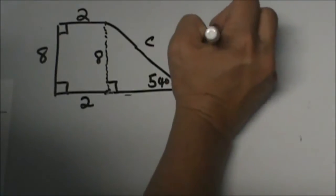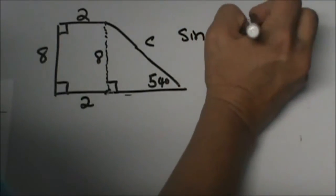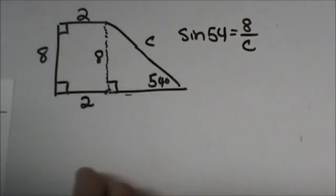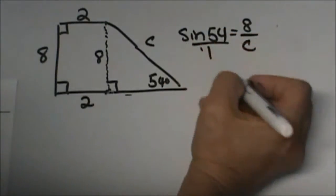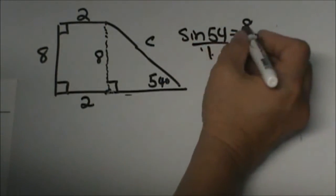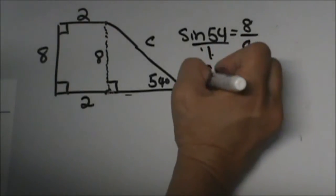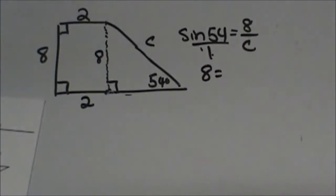So the sine of 54 is 0.8090. C is equal to 8 over C, and I'm going to have to do some fancy... This is one of those funky backward dividing problems. 8 times 1 is 8 over the sine of 54.